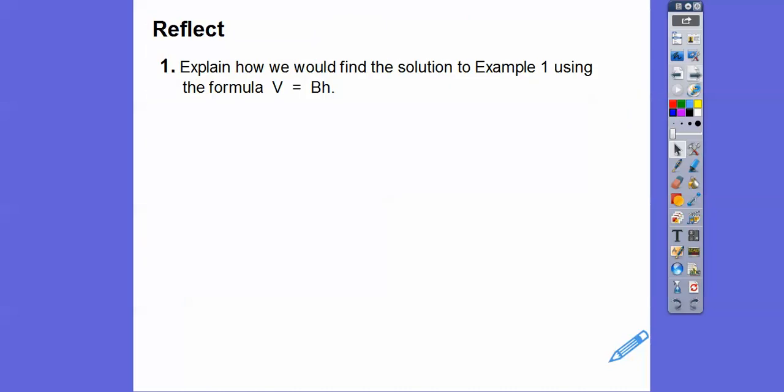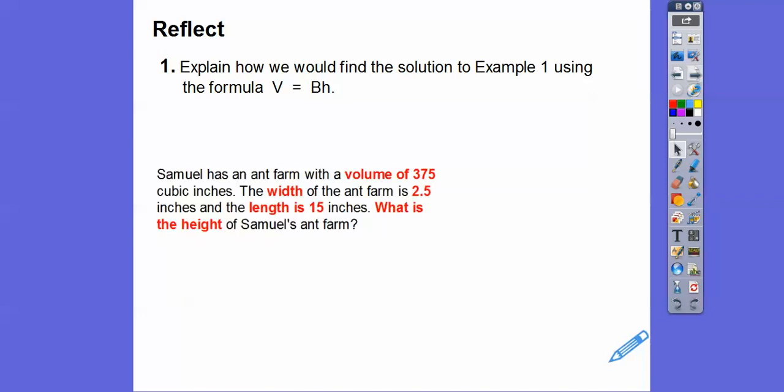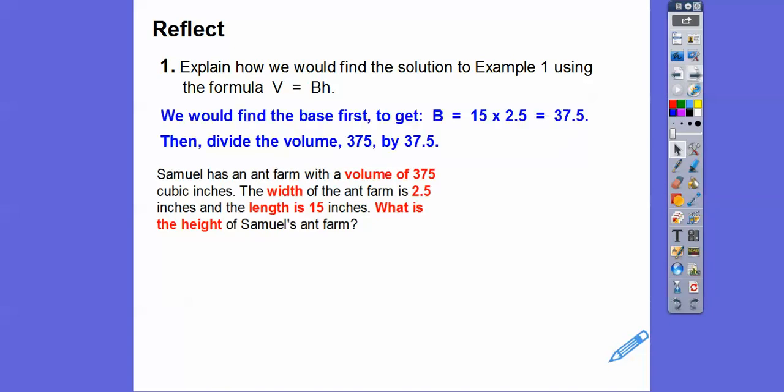So explain how we can find the solution to the example using the formula volume equals base times height. Well, we can pick two of the sides. And if we did the length times the width, which is 2.5 times 15, we can call that the base right there. And then we can divide the volume by the base to get the height.